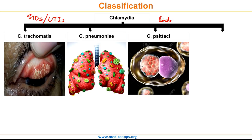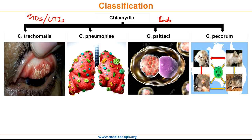Chlamydia psittaci causes psittacosis, which in birds and in humans often starts with flu-like symptoms and becomes a life-threatening pneumonia. Finally, the fourth important species is Chlamydia picorum. This species has been isolated only from mammals like cattle, sheep, goat, and koalas. C. picorum is the most common chlamydial species to infect koalas and is the most pathogenic in them.